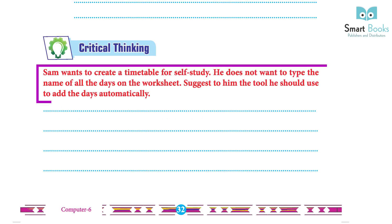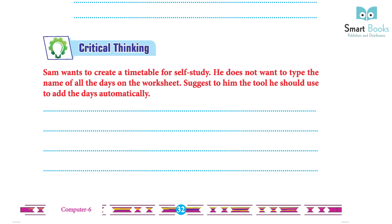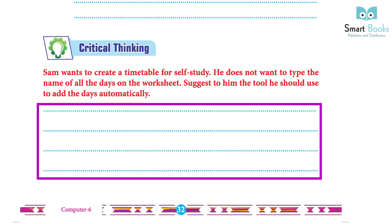Critical Thinking: Sam wants to create a timetable for self-study. He does not want to type the name of all the days on the worksheet. Suggest to him the tool he should use to add the days automatically. Answer: use the Auto Fill feature. Step 1: enter the first two values to start the series. Step 2: select both cells. Step 3: position the mouse pointer over the bottom right corner of the last selected cell and observe the pointer change to a plus sign. Step 4: drag the mouse to where you want the series. Step 5: observe the cells filled with the desired values.